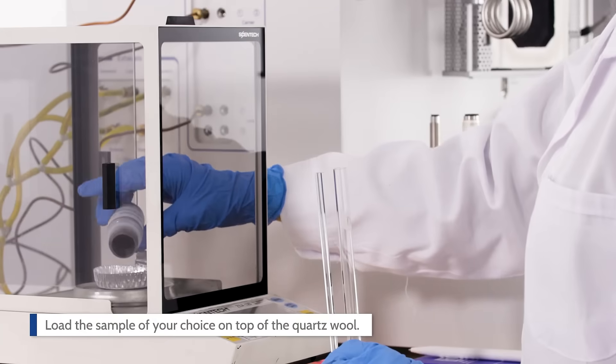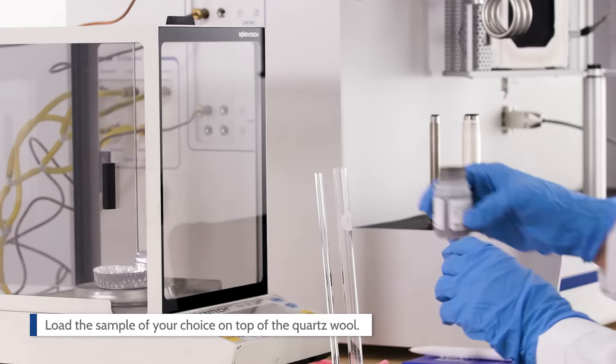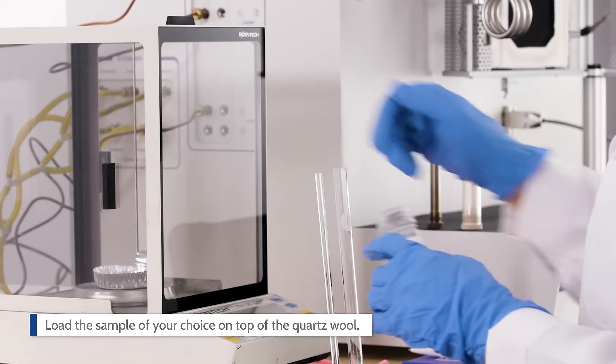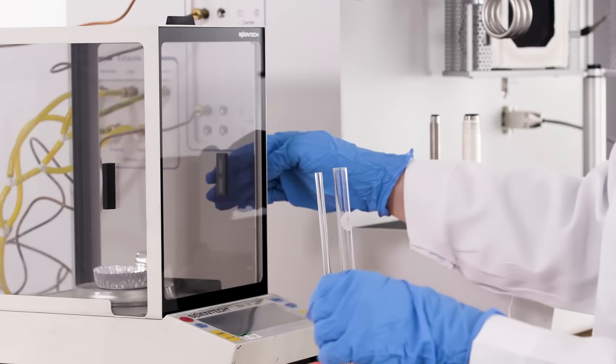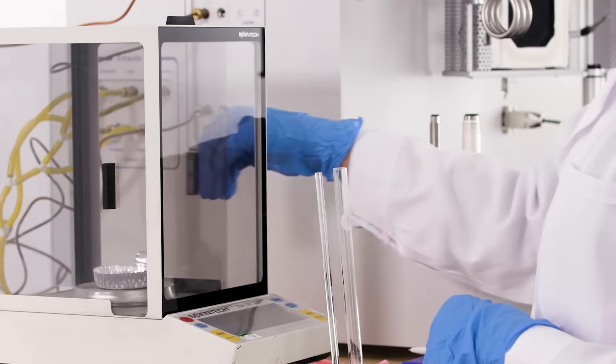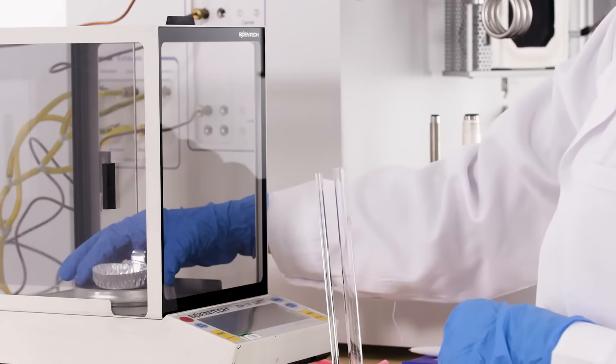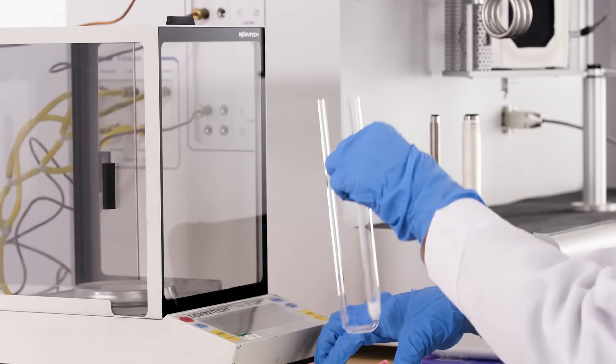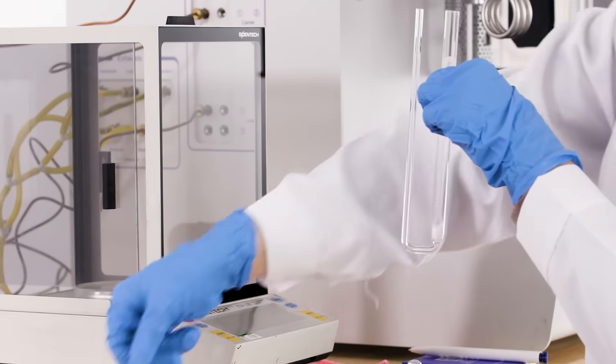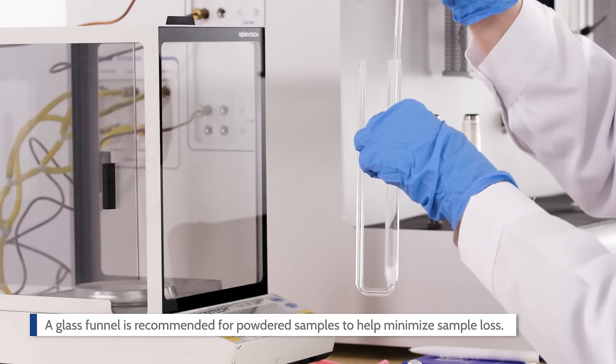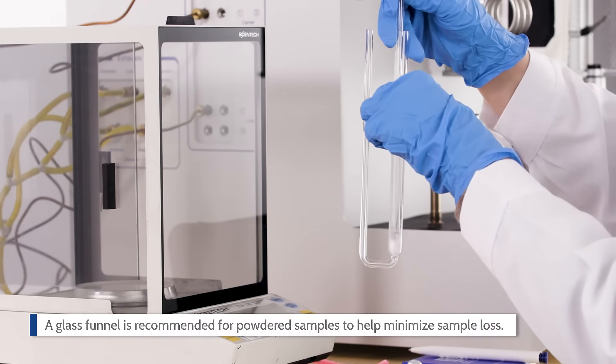Load the sample of your choice on top of the quartz wool. The sample tube can handle powders and pellets up to 9 millimeters in diameter. A glass funnel is recommended for powdered samples to help minimize sample loss.